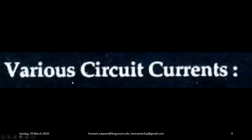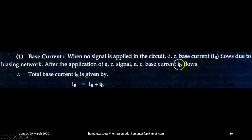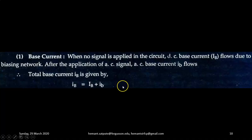Now let us learn about various circuit currents which flow in the circuit. Number one, the base current. When no signal is applied in the circuit, DC base current, capital I with suffix capital B, flows due to the biasing network. After the application of AC signal, AC base current, small i with small suffix b, flows. So the total base current IB is given by the DC biasing current plus the AC biasing current after applying the AC input voltage.